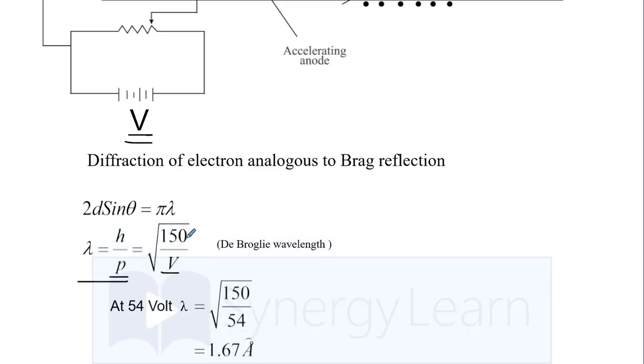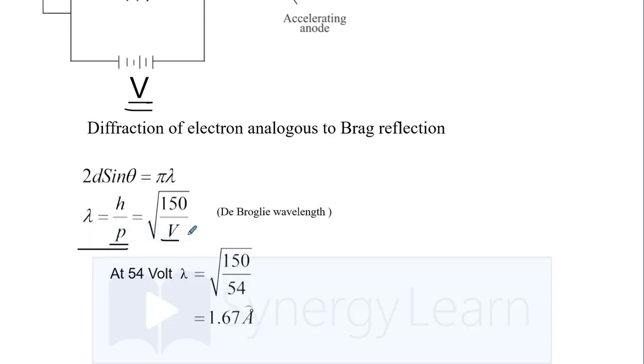If I put this V as 54 volt which they have used in this experiment, we will obtain wavelength of electron as 1.67 angstrom. This is using de Broglie wavelength, which you can say is theoretical wavelength.